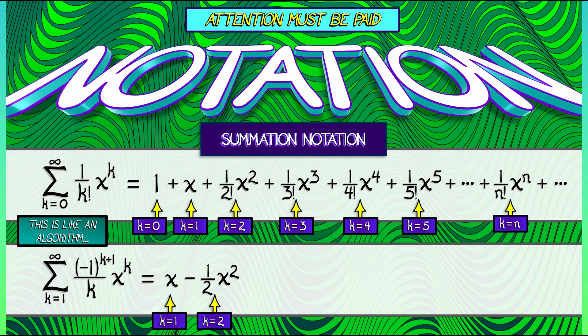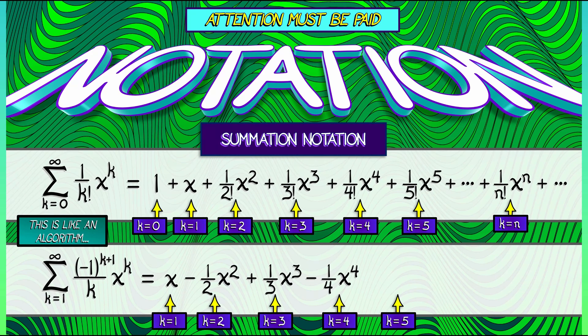When k equals 3, you can check that this is 1 third x cubed. When k equals 4, we get negative 1 fourth x to the 4th. Keep going, up until the nth term, which looks just like what we have under the summation sign, but with an index of n.